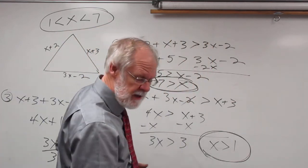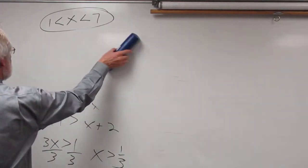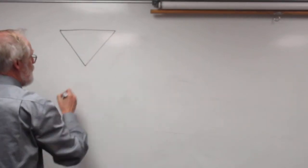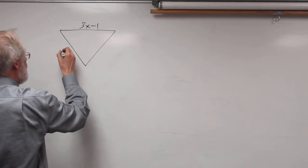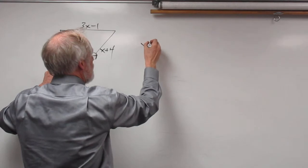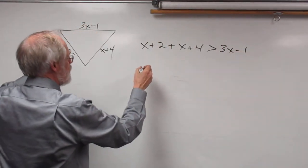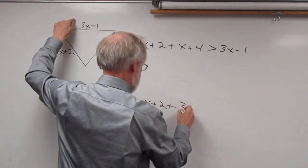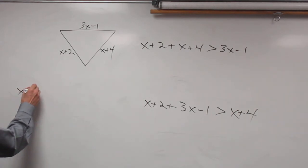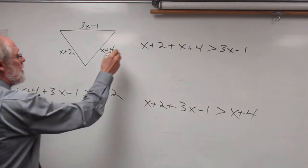Let's try one more problem, just to make sure you have the idea — the numbers are slightly different. Take a triangle with sides 3x minus 1, x plus 2, x plus 2, and x plus 4. We set up three inequalities: x plus 2 plus x plus 4 must be greater than 3x minus 1; x plus 2 plus 3x minus 1 must be greater than x plus 4; and x plus 4 plus 3x minus 1 must be greater than x plus 2.